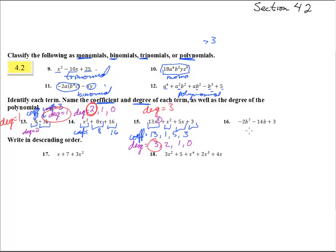Number 16 — we have 1, 2, 3 terms. The coefficients are negative 2, negative 14, and positive 3. The degrees of these are 7, 1, and 0. So the degree of the entire polynomial is the biggest one, which is 7.